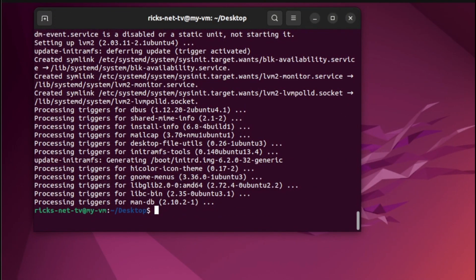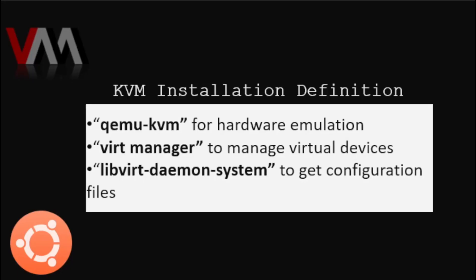Alright, we're done. Let's proceed to the next step. To understand the code line, we need to define the following. First, QEMU or KVM — this is for hardware emulation. Virt-Manager is to manage virtual devices, while the libvirt-daemon is to get configuration files.